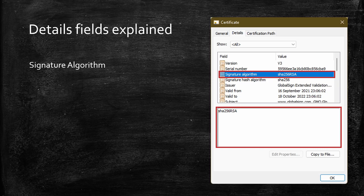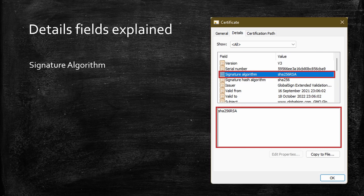Next we have a signature algorithm, which is the algorithm that was used to sign a certificate. In this screenshot, we see SHA-256 with RSA as the algorithm which was used for signing. This means a SHA-256 hash of this certificate was signed using an RSA private key. Signature hash algorithm is the hashing algorithm which was used for generating a hash of the certificate.